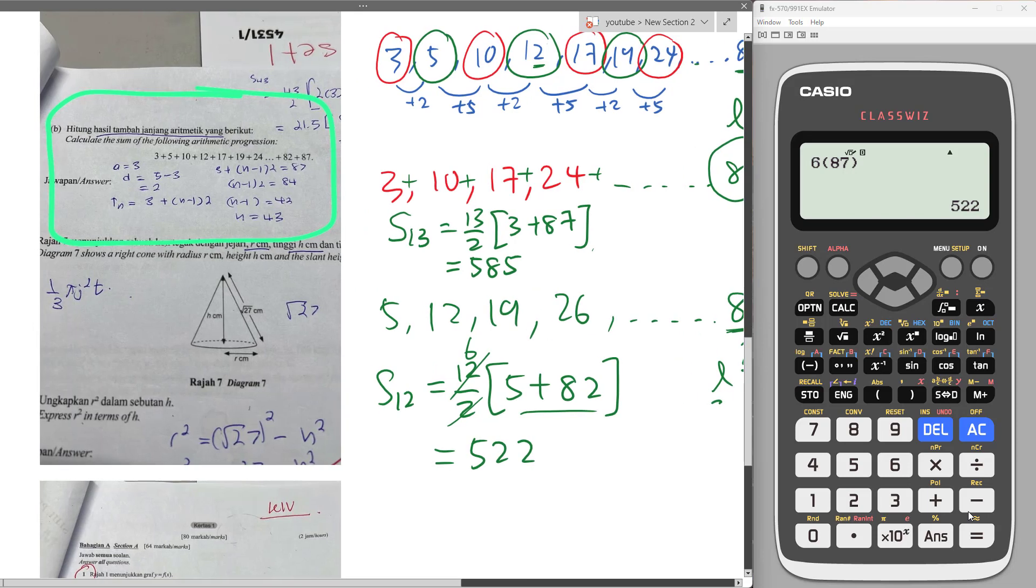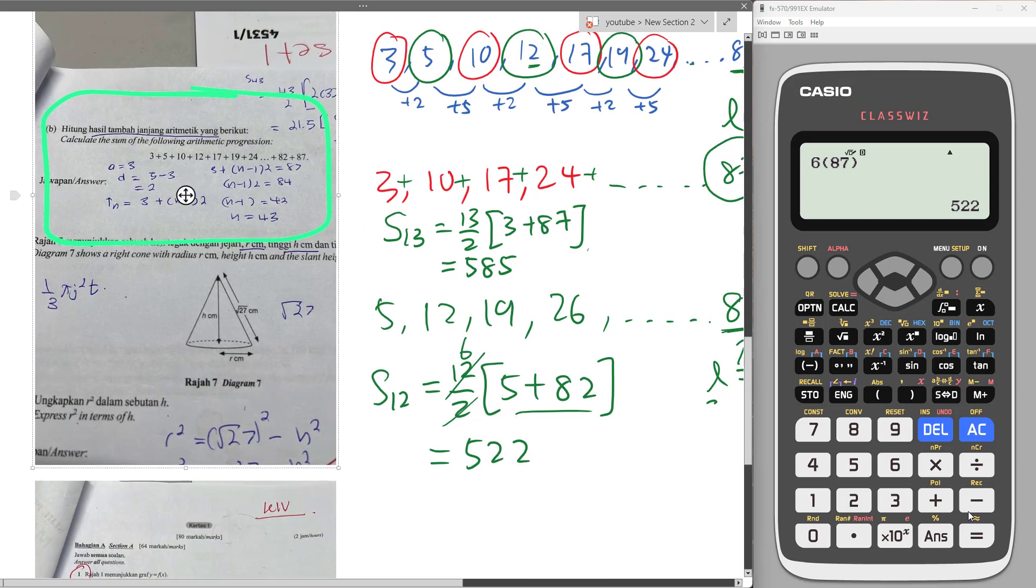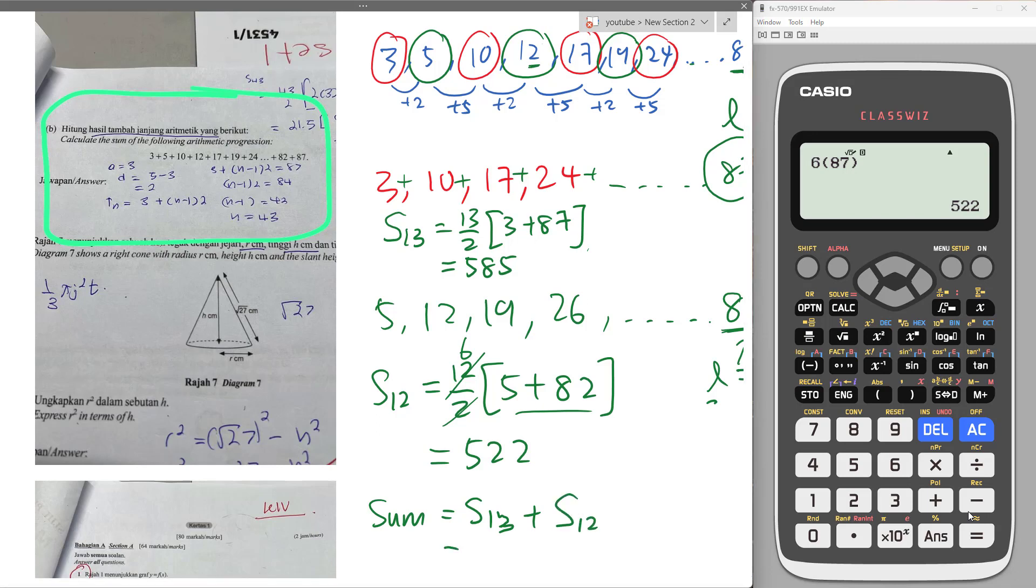So I know in order to sum all the terms here, the sum will be s13 plus s12 for the second progression. Of course I don't want to write it like this because they are different progressions. I just do 585 plus 522, so 1107.